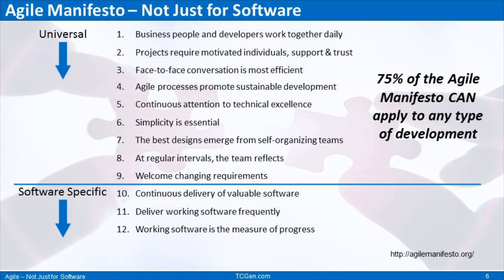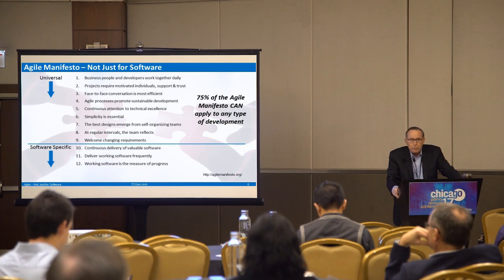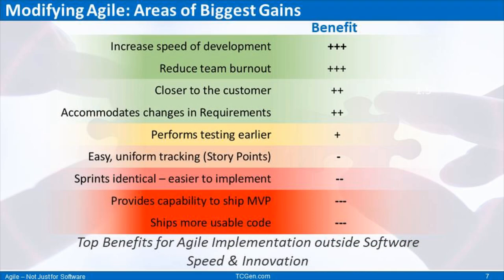I'd like to bring you back to the Agile Manifesto. This was derived in Snowmass, Utah in 2001 — about 16 years ago — by a bunch of software engineers and process people working on three problems: engineers got burnt out at the end of development, they worked on a lot of code that didn't get shipped, and they didn't have predictable schedules. What's really interesting, especially for those at PDMA, is 75% of the Agile principles are just basic best practices. Only three out of the 12 relate specifically to software, and we'll talk about how to use prototypes and demos to get around those last three.